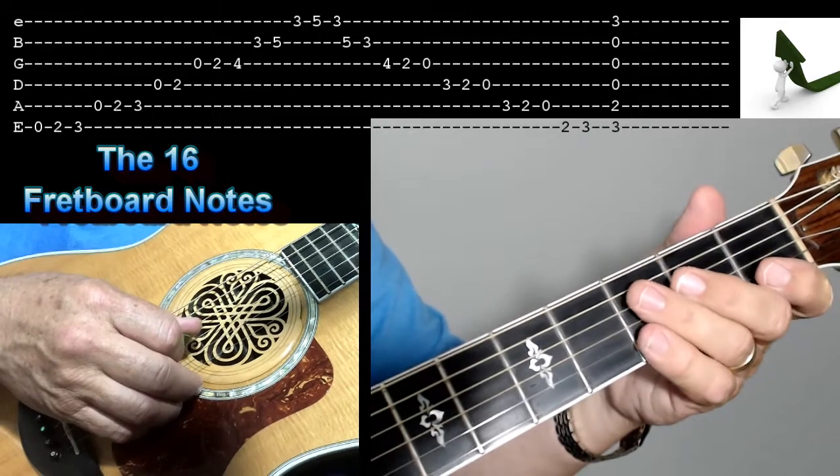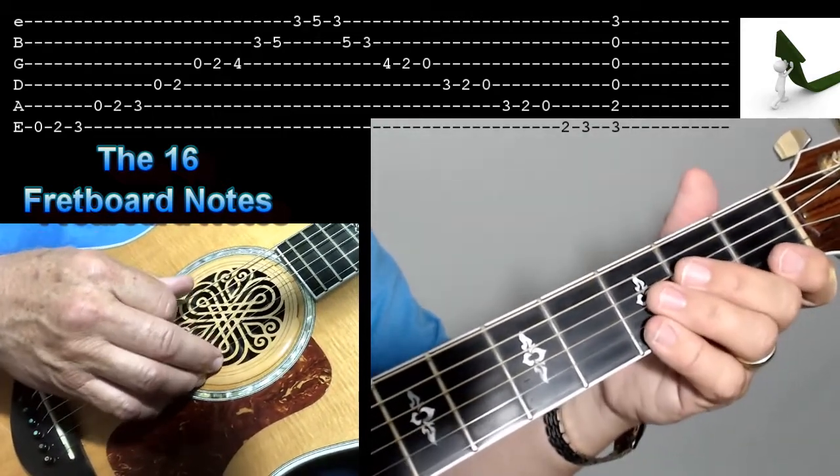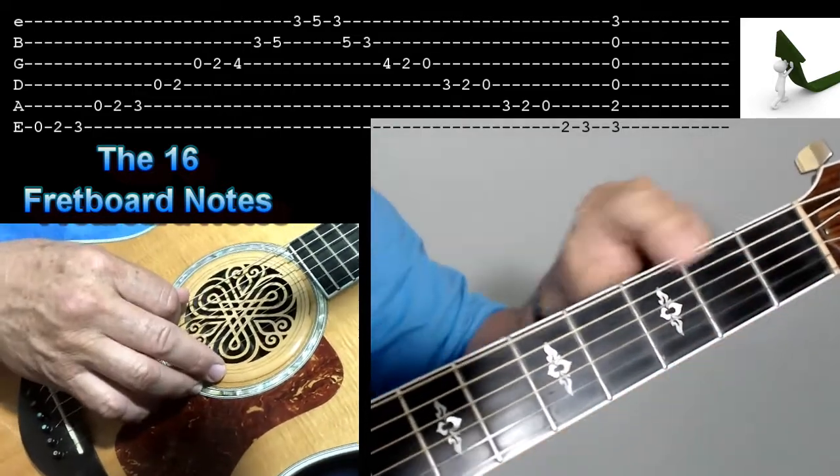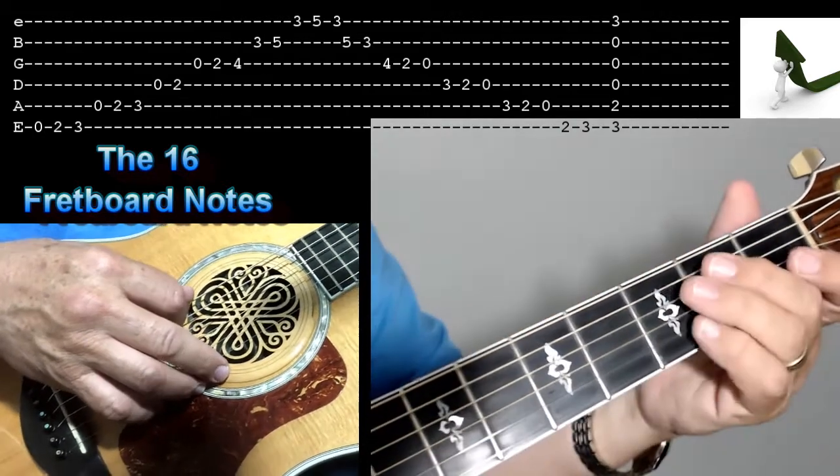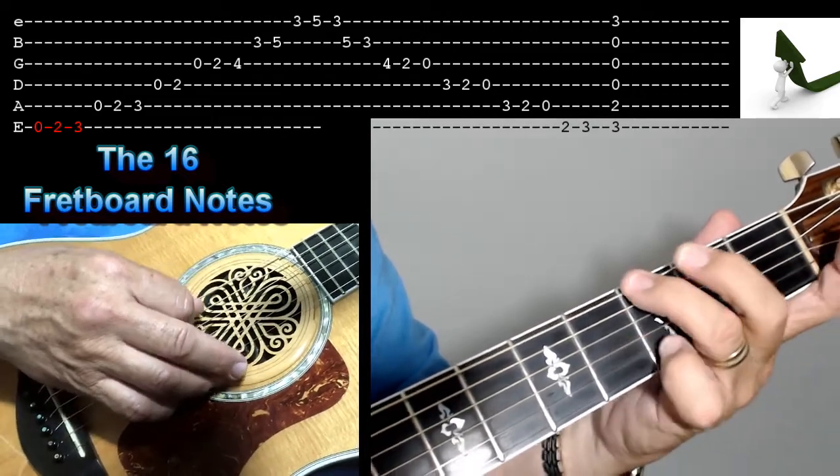Okay, so enough said. Let me give you the 16 notes that we're going to use. I'll play these notes for you, and then we'll come out and do a couple of exercises. So we're going to start with the sixth fret and work our way, five, four, three, two, and one. So here's what we do. We've got open on six, two, three.